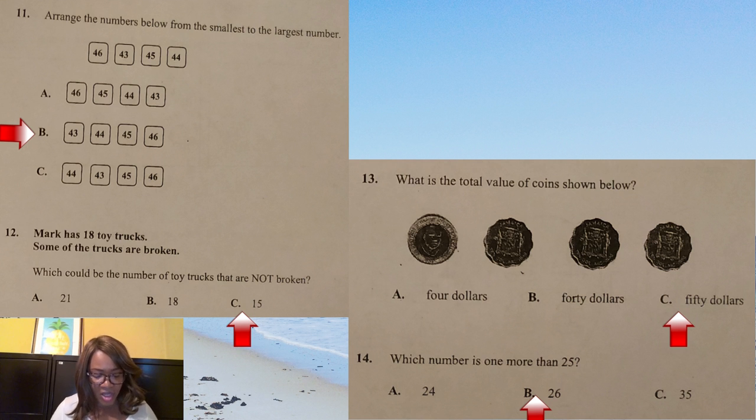Question 12: Mark has 18 toy trucks. Some of the trucks are broken. Some, you notice that no number is given. So is reasoning ability now. Which could be the number of toy trucks that are not broken? It can't be 21 because Mark only has 18 toy trucks. Let us look now. It can't be 18 because it says 18 and some, some of them are broken. So you can't get back the same number. So the most logical number now would be option C, 15. Question 13: What is the total value of coins shown below? So here we have some Jamaican money. We have the round $20 coin and then we have three $10 coins. So 20, 10, 10, 10, that's 50. 20 plus 10 plus 10 plus 10 equals 50. So we would see that the answer would have to be option C, $50.